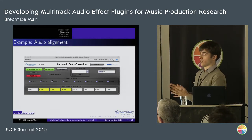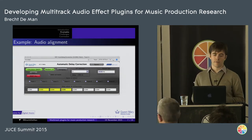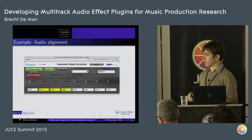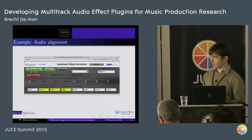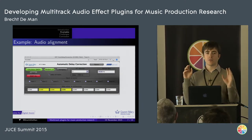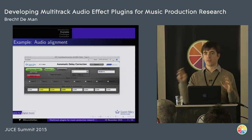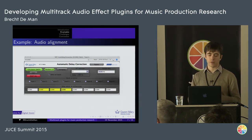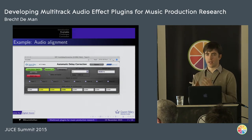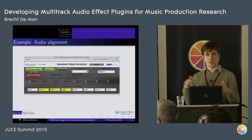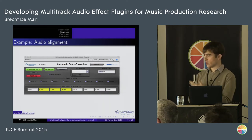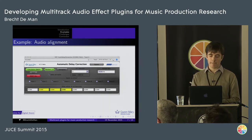The automatic delay correction plugin is an implementation of an algorithm developed at the Centre for Digital Music. If you have different audio streams — say, different microphones at various distances from the same drum kit or piano — it aligns them so that you don't get comb filtering, which occurs when there are delays between different audio sources. It does this with near sample accuracy.